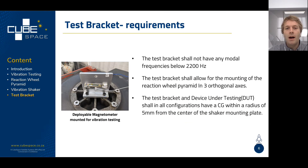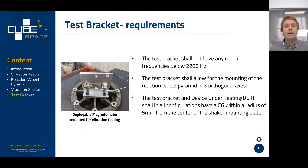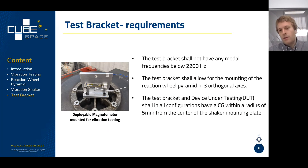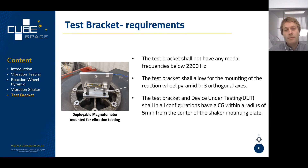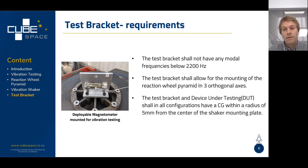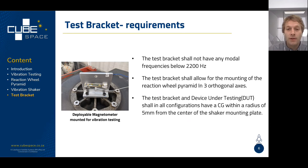There are a couple of requirements that come into our testing and bracket design. All our testing is done in the range of zero to 2,000 hertz, based on the rocket's vibration outputs — most harmful vibrations occur within that range. For this reason, the test bracket needs to have its first modes outside of that range. At minimum, we prescribe the first mode frequency at nothing below 2,200 hertz.